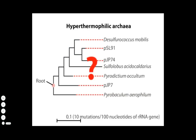Divergence data include many modifying factors that cause changes to accumulate at different rates. For example, different organisms reproduce at different rates. In different organisms, DNA mutates at different rates. And a molecular clock gene may be subject to different levels of selective pressure in different organisms.